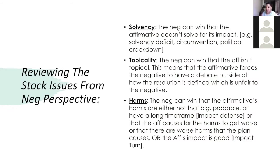Reviewing the stock issues from the negative perspective — how are you dismantling the AF? The stock issues are solvency, harms, inherency, topicality, and significance. Solvency: the negative can win that the affirmative doesn't solve for its impact. For example, there's a solvency deficit or a circumvention argument. A kind of political crackdown argument — conservatives react to the plan in a way that causes it not to pass — is an example of a circumvention argument.